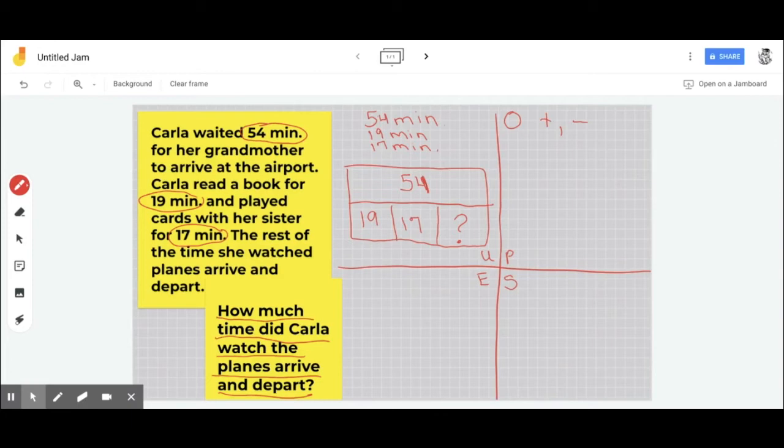Now for my M, which is my method, I'm going to write it out in words. First, I add 19 and 17.